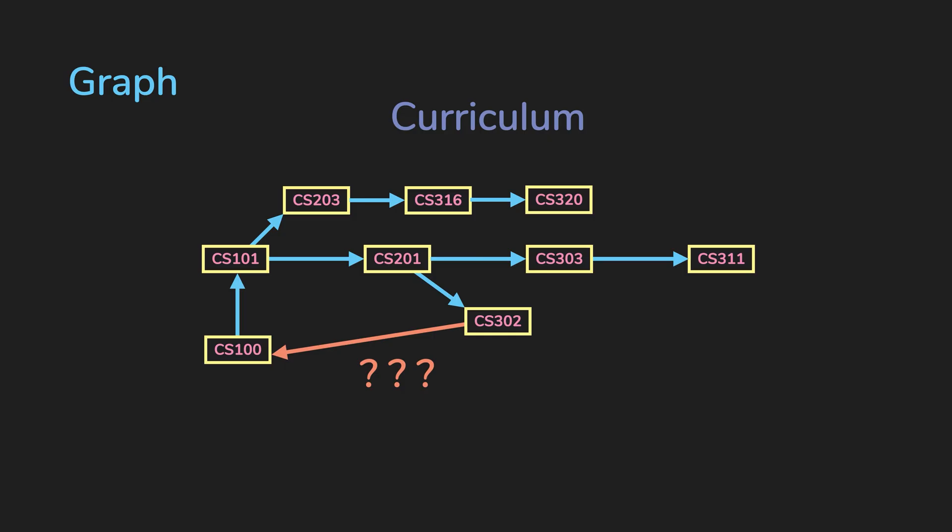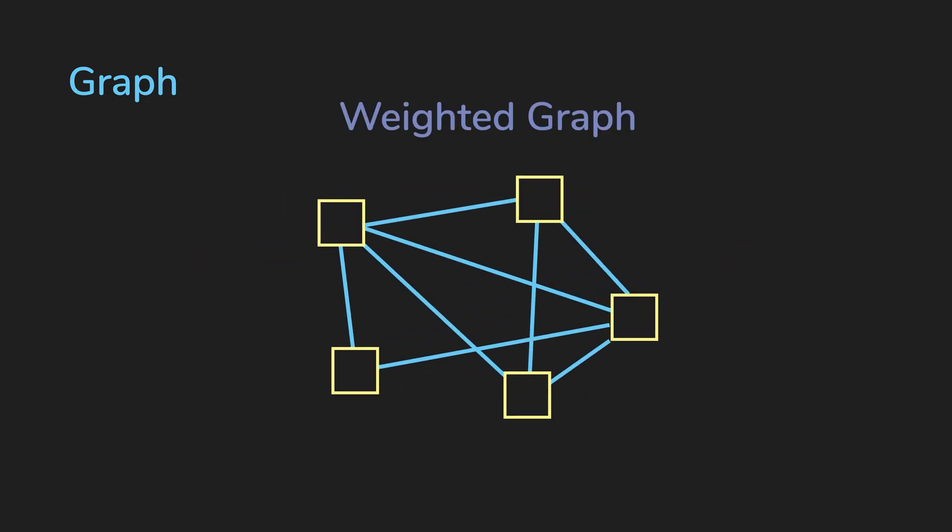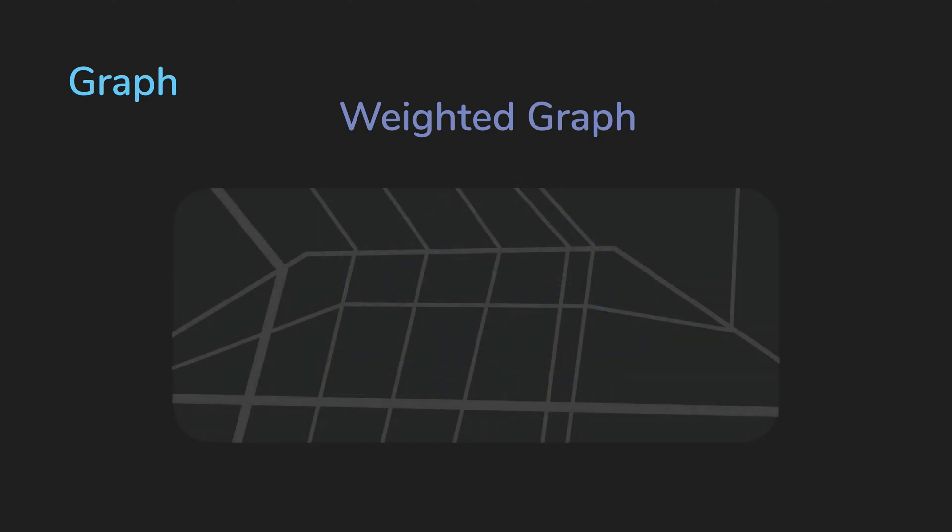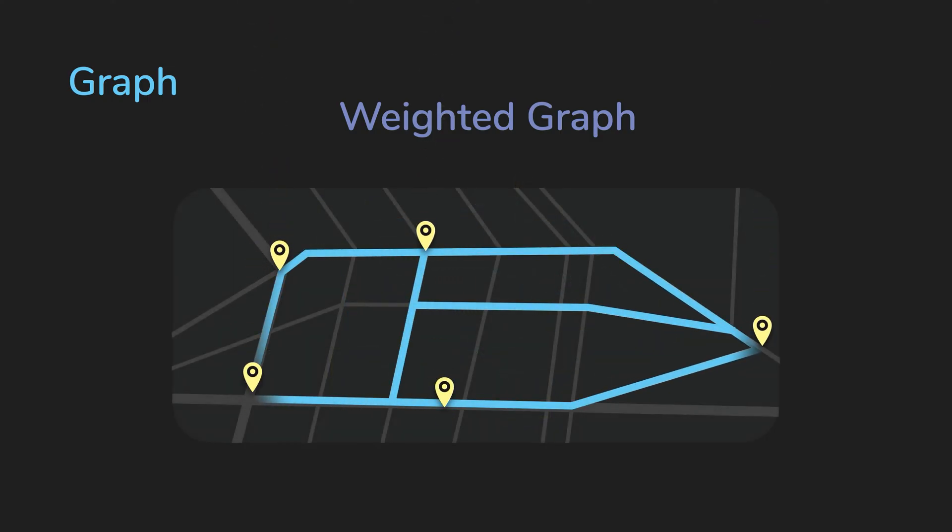More on that in the future. Lastly, your graph can be weighted or unweighted. Weighted means edges have values in them. These are very useful for things like maps, where cities are vertices and edges represent the roads between the destinations.